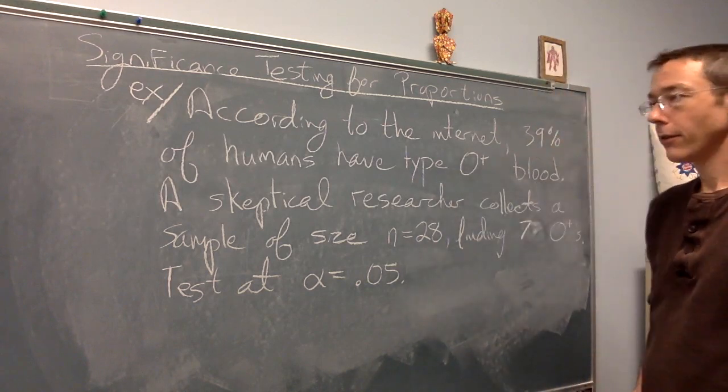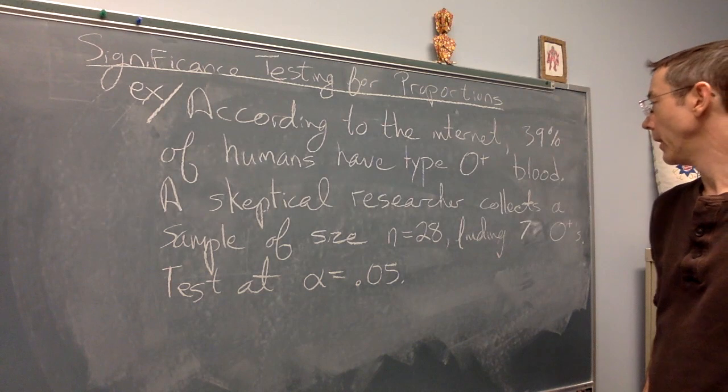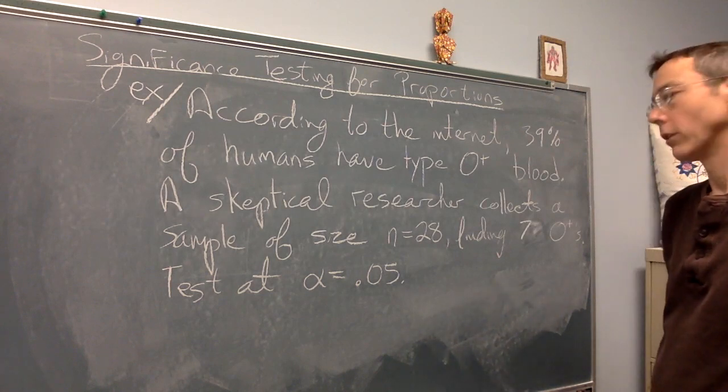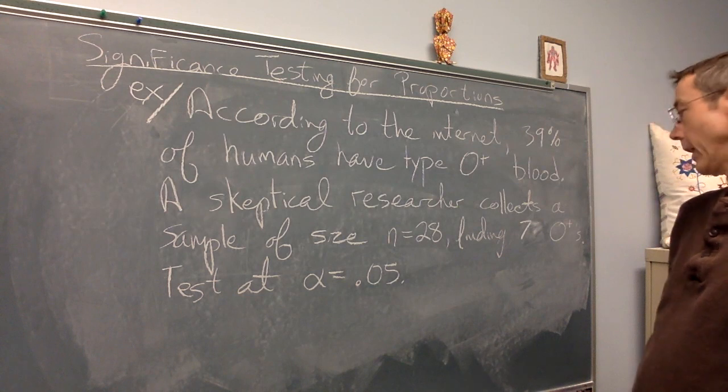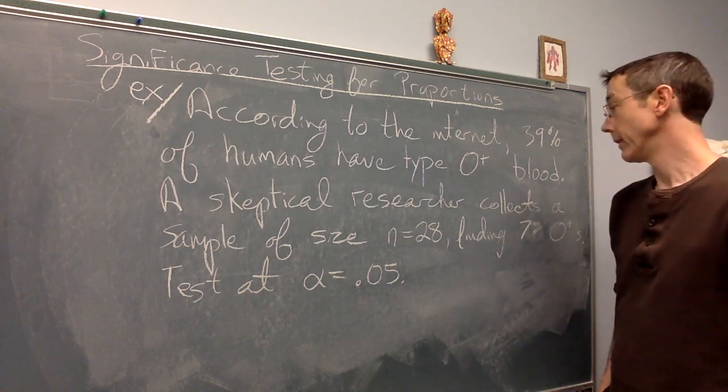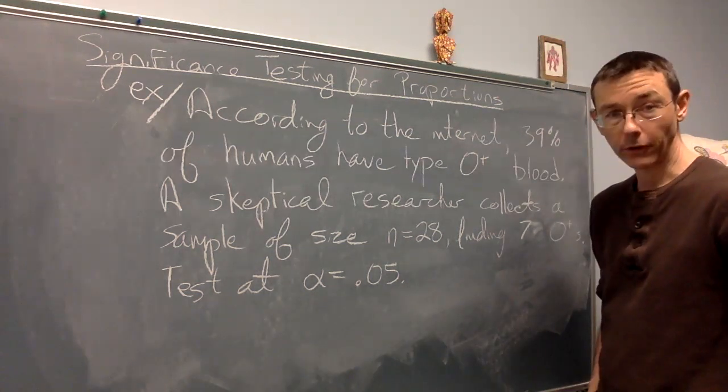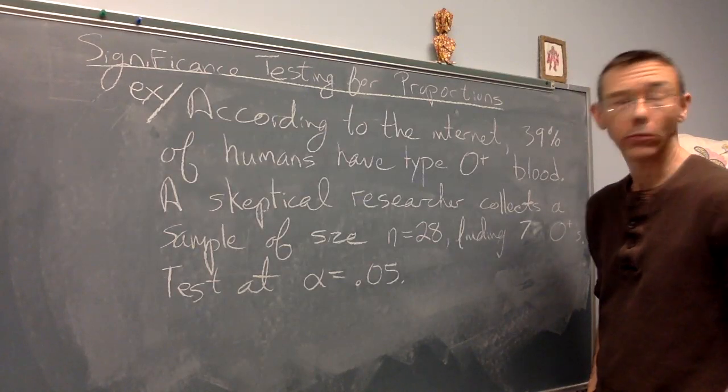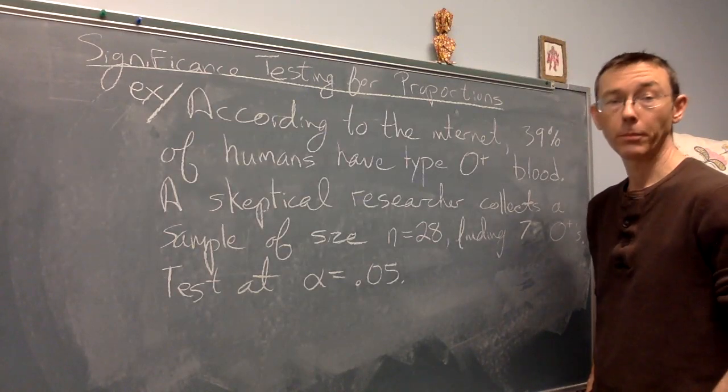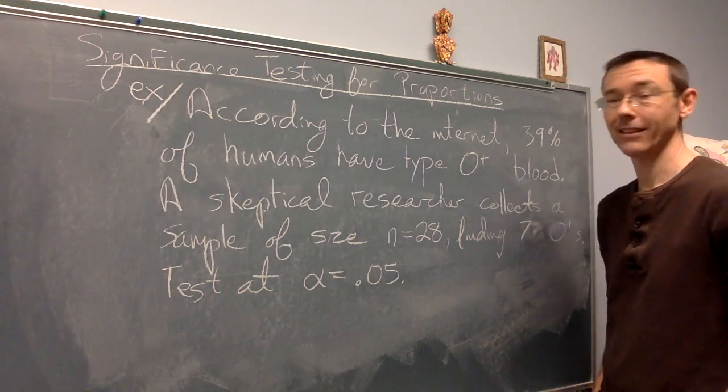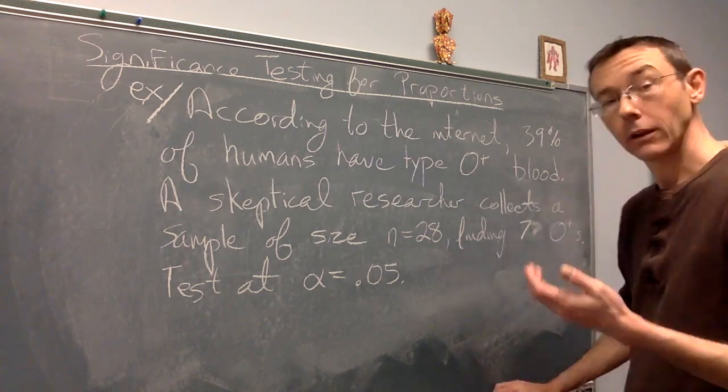According to the internet, 39% of humans have type O positive blood. A skeptical researcher collects a sample of size n equals 28, finding seven O positives. So we want to evaluate the claim of the internet that 39% of humans have type O positive blood. We want to get a p-value, see if it's low enough, if our sample represents good evidence against the internet's claim. Let's do this.